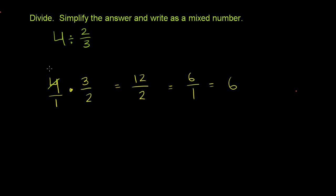So 4 divided by 2 is 2, 2 divided by 2 is 1. So it becomes 2 times 3, which is 6, over 1 times 1, over 1. Or this is equal to 6.